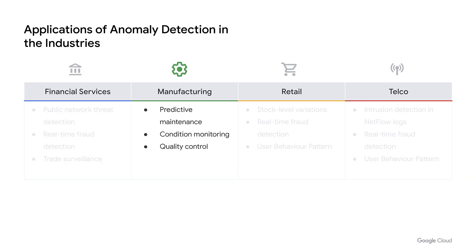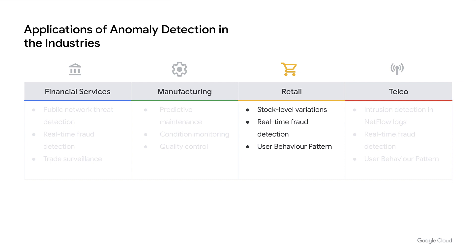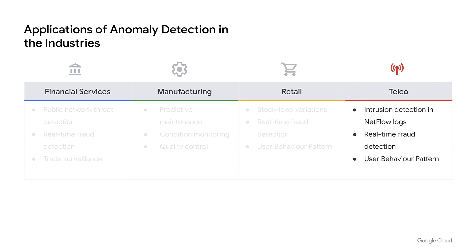Similarly, by detecting anomalies in industrial equipment, manufacturers can predict and prevent catastrophic failures that could cause capital and human loss by initiating proactive equipment shutdown and preventative maintenance. Likewise, for retail, we can see this being used to help manage inventory, detect fraud, and track user behavior patterns. Another example is a telco company doing subscriber analytics, specifically focusing on detecting anomalous wireless traffic, real-time fraud detection on calls, SIMs, and user behavior patterns. And across all these industries, cybersecurity is top of mind for most customers because of the economic cost of intrusion and security attacks.